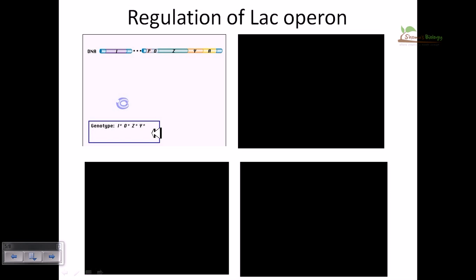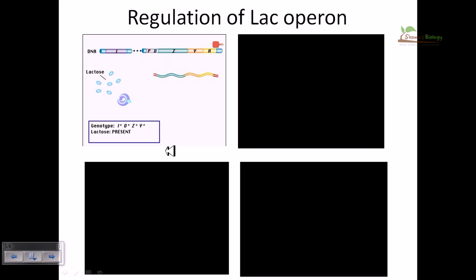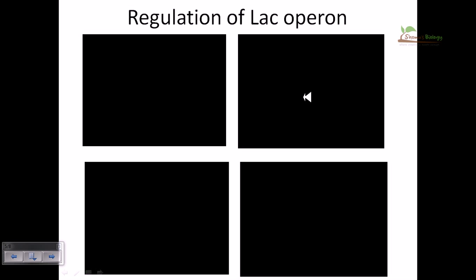In the second scenario, at the same wild-type genotypic level, if lactose is present, lactose binds with the repressor, making it unable to bind with the operator region. As a result, RNA polymerase can sit onto the promoter and initiate transcription of the structural genes Z, Y, and A. The mRNA is produced, translated into the desired products, and beta-galactosidase is one of those products.